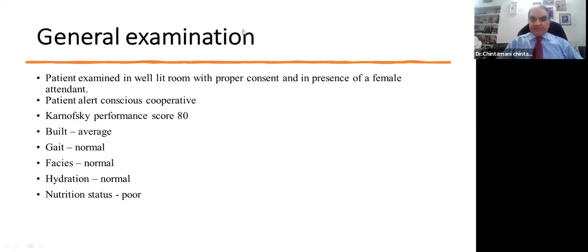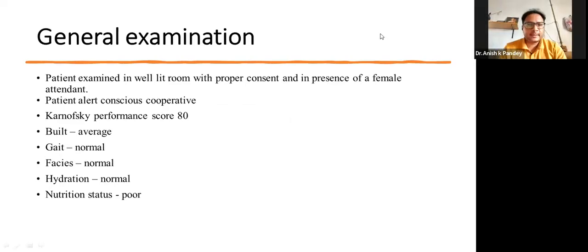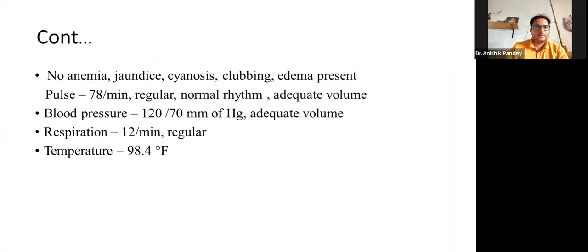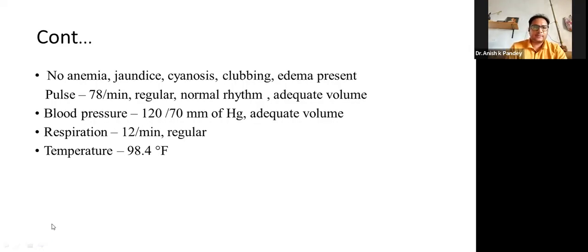Patient examined in a well-lit room with proper consent in the presence of a female attendant. Patient is alert, conscious, and cooperative. Karnofsky performance score was 80. Built average, gait normal, face normal, hydration normal, nutrition status was poor. No anemia, jaundice, cyanosis, clubbing, or edema present. Pulse was 78 per minute, regular. Blood pressure 120/70 mmHg, respiratory rate 12 per minute.